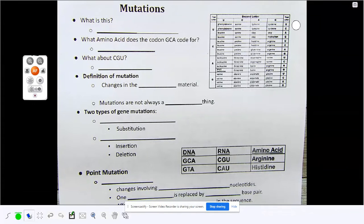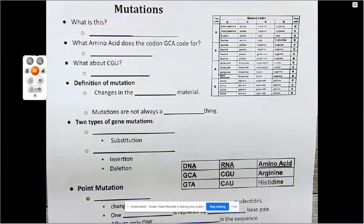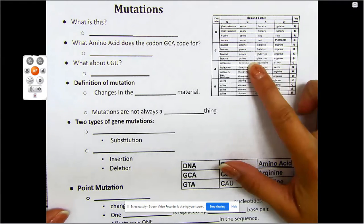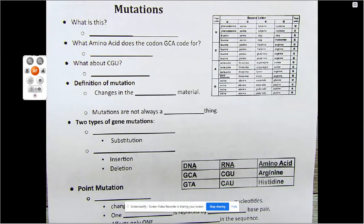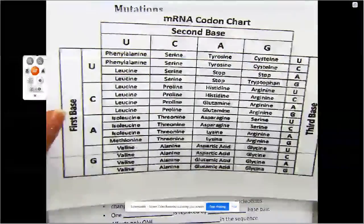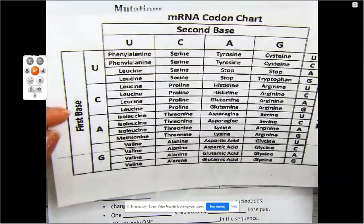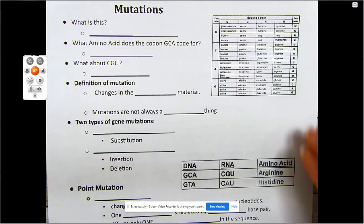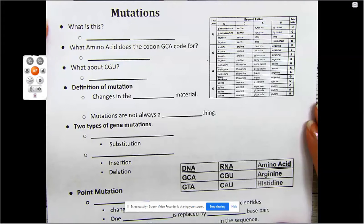Hey scientists, welcome back. Today we're going to be talking about mutations. You have access to the mutation slideshow and your mutation notes in Schoology. For the mutations notes, you will need access to a codon chart. I have provided you here with a small codon chart, but I'm also going to access my own codon chart with the box on the front and then the wheel on the other side. So now that I have what I need, let's go ahead and talk about mutations.